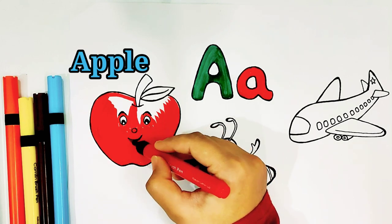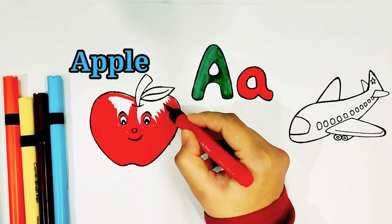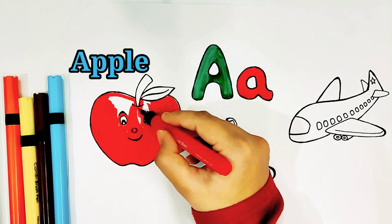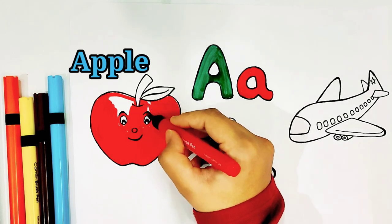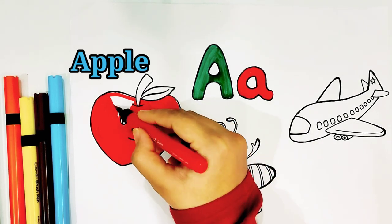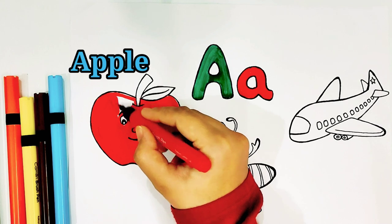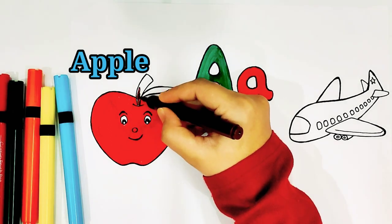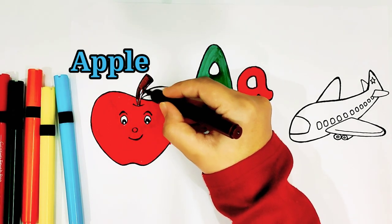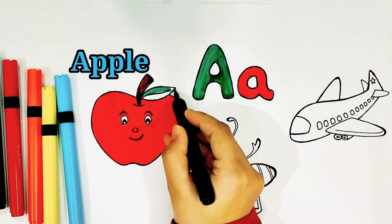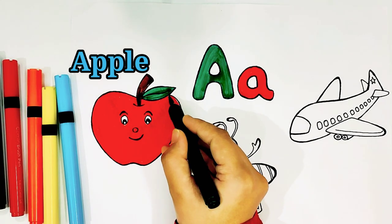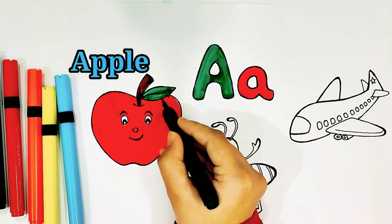A, B, C, D, E, F, G, H, I, J, K, L, M, N, O, P, Q, R, S, T, U, V, W, X, Y, Z. Now I know my ABCs, next time won't you sing with me?